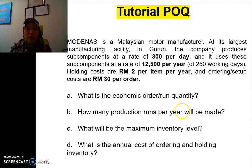They want us first, what is the economic order quantity, or run quantity, which is the Q, and then they ask us how many production runs per year, and then what is the maximum inventory level. Remember in POQ, we have the IMAX, and then for the annual cost of ordering and holding.